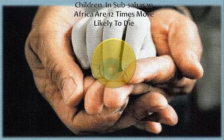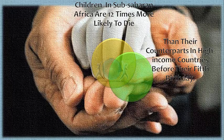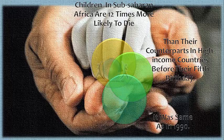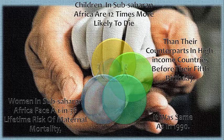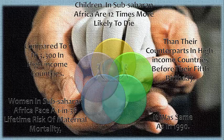Children living in fragile states and conflict-affected countries face higher risk. Children born in sub-Saharan Africa are 12 times more likely to die before their fifth birthday than their counterparts in high-income countries — the same situation as in 1990. A child born in Sierra Leone today is about 30 times more likely to die before age five than a child born in the United Kingdom. Women in sub-Saharan Africa face a 1 in 36 lifetime risk of maternal mortality, compared to 1 in 3,300 in high-income countries; in Chad, the risk is 1 in 18.